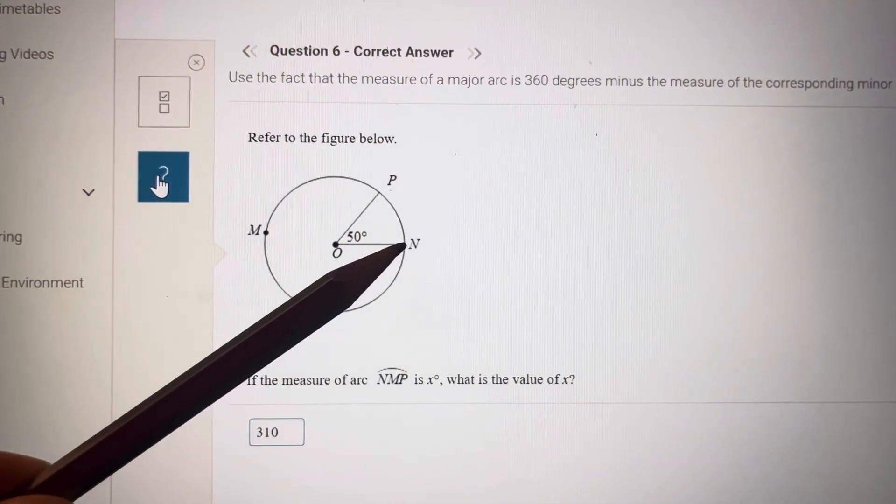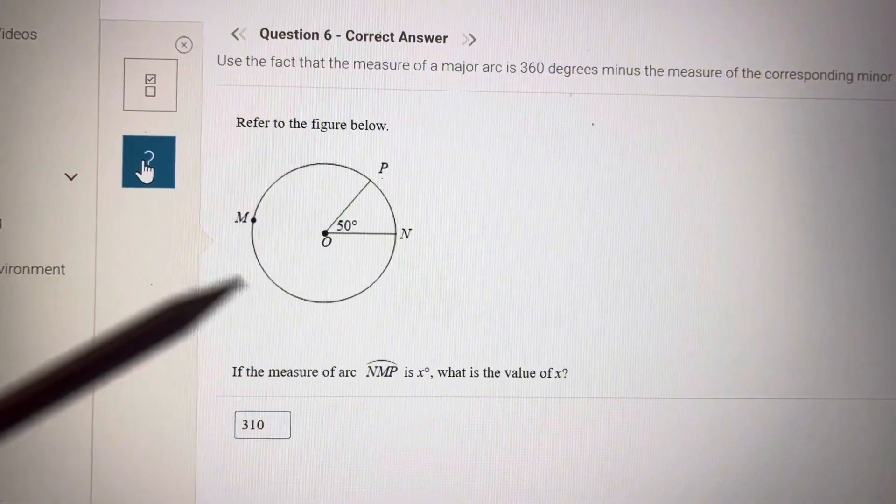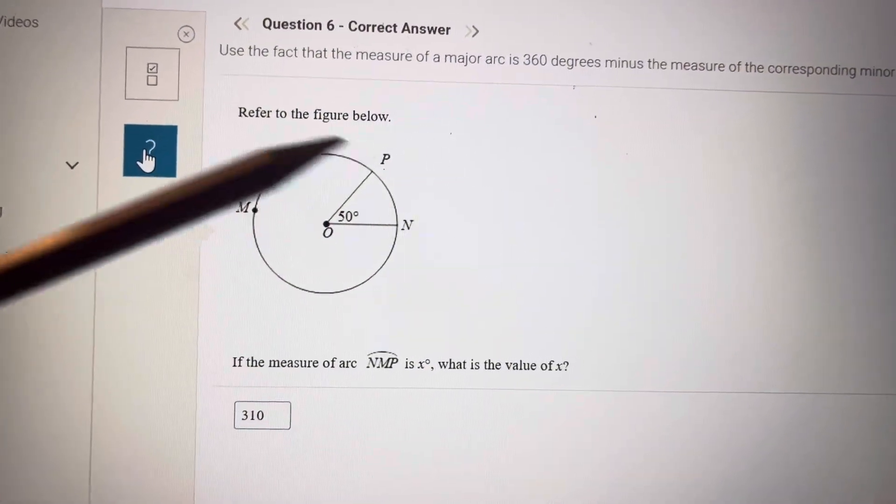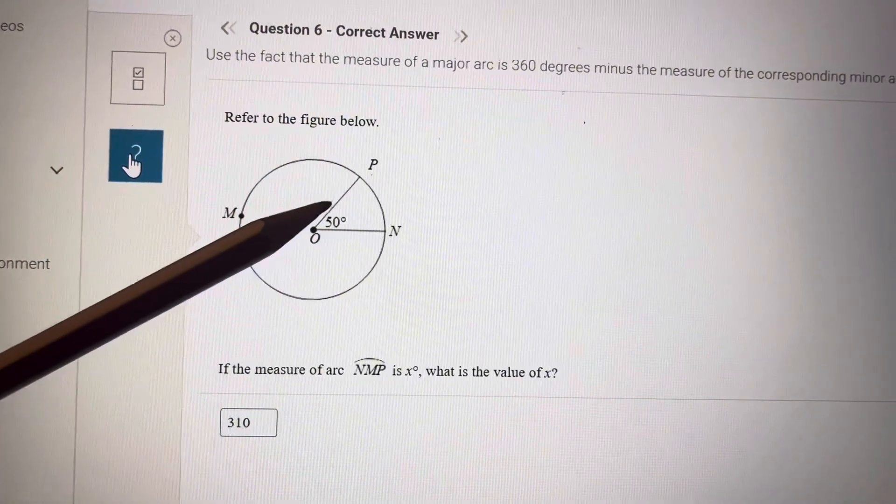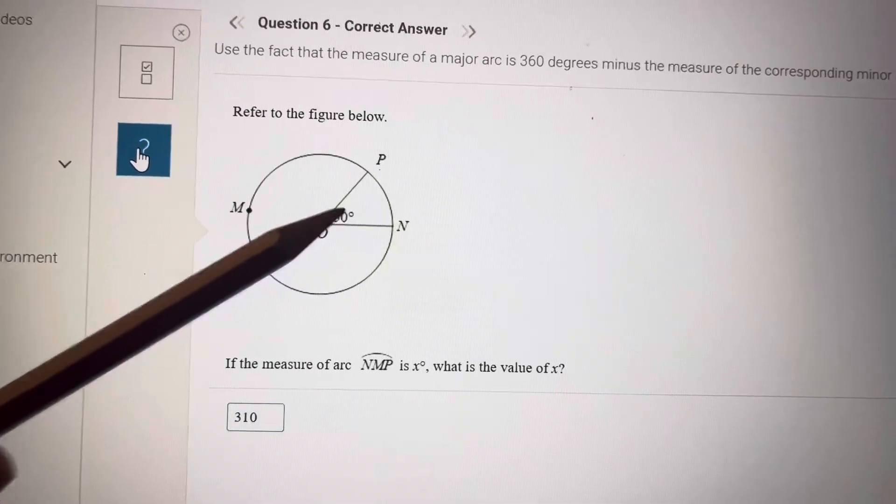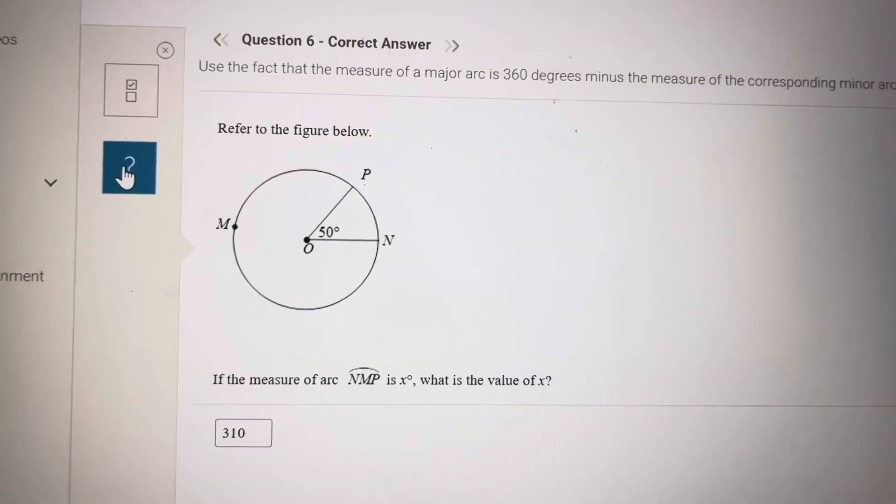He wants the value of NMP, so this big arc. So it's equal to 360 minus 50, because this PN is equal to 50. So 360 minus 50 is 310.